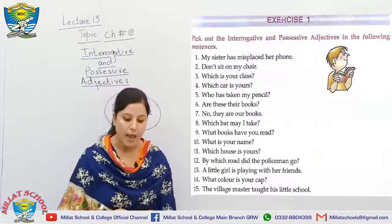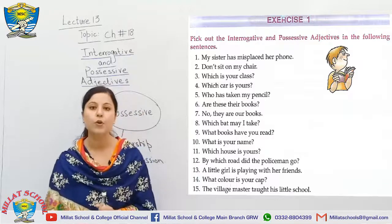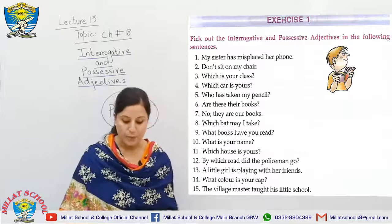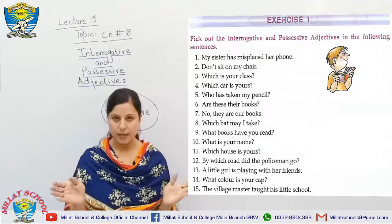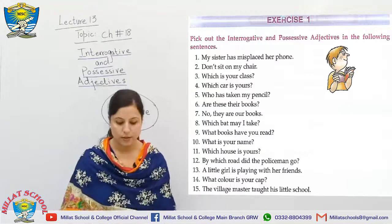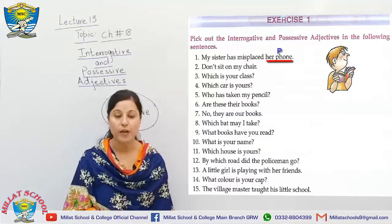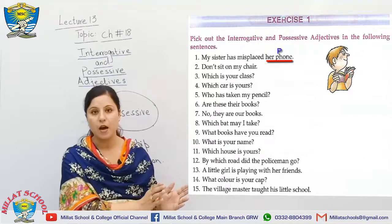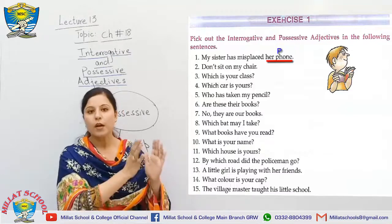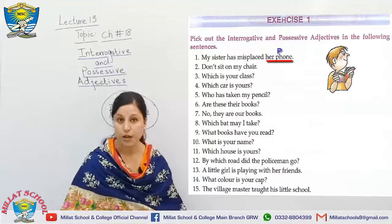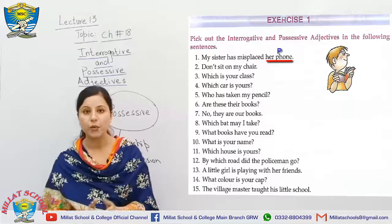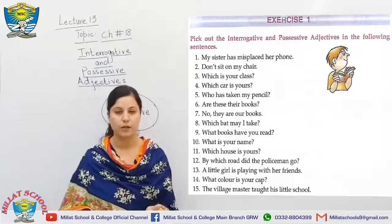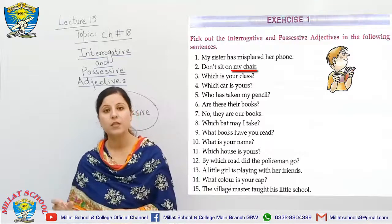On page 62, exercise number one, we identify interrogative and possessive adjectives. Sentence one: 'My sister has misplaced her phone.' The possession here is 'her phone.' Notice that before the possessive adjective there must always be a noun. After the noun there will always be possession using his, her, or its.